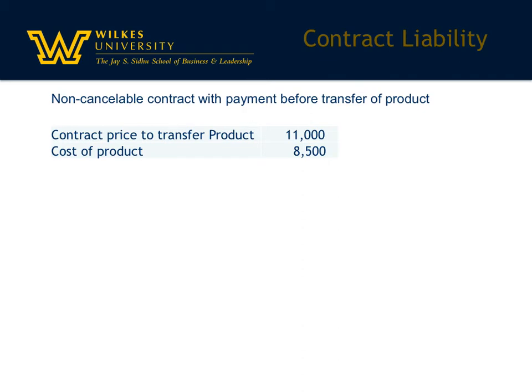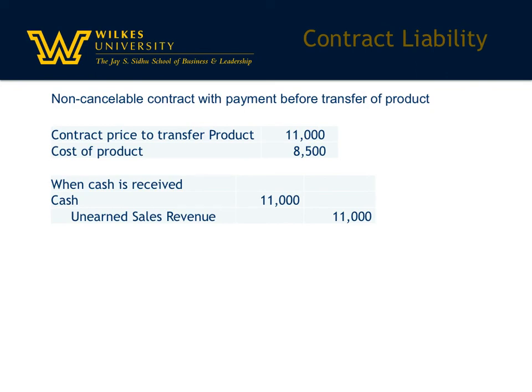The cash is received first — very typical of your traditional unearned revenue concept. Think of your first set of adjusting journal entries in financial accounting, where you recorded the receipt of an asset along with an obligation. This is an obligation to provide the service — the same exact thing. So when the cash is received, cash is debited and unearned sales revenue is credited. That's the contract liability.